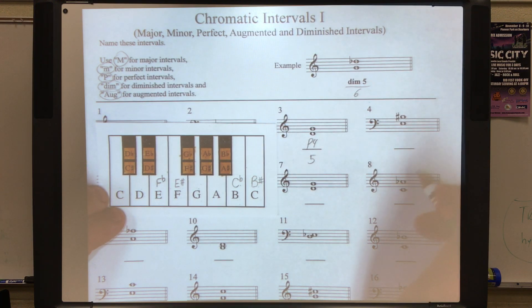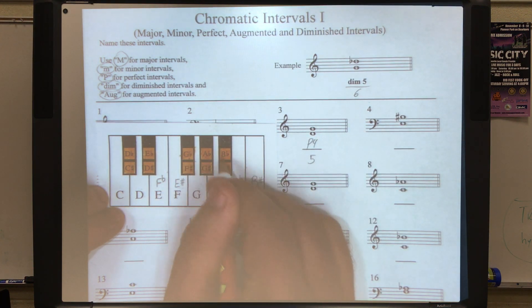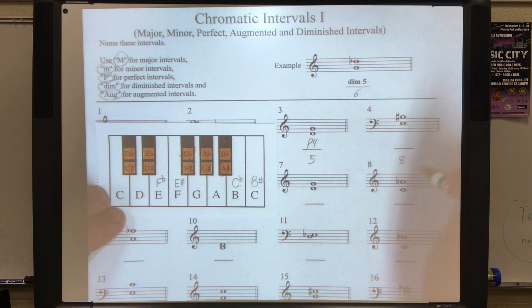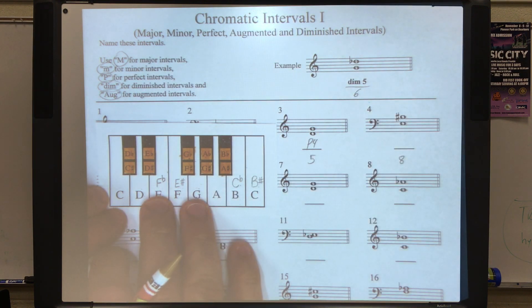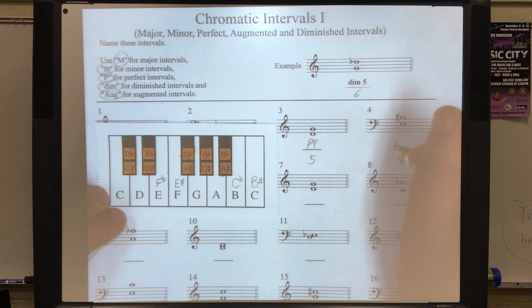Number four. We've got an E to a B sharp. Let's start on E. That's zero, one, two, three, four, five, six, seven, eight. Remember, it's C or B sharp. Eight half steps. Now, if this were an E to a C, we would have a different interval. But because it's written as an E to a B sharp, it's an interval of a fifth, and it's an augmented fifth because of the sharp.